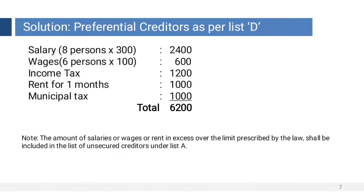Now let us see how to prepare preferential creditors as per List D. Salary: 8 persons into Rs. 300 equals Rs. 2,400. Wages: 6 persons into Rs. 100 equals Rs. 600. Taxes — income tax Rs. 1,200. Rent for 1 month Rs. 1,000. Municipal tax Rs. 1,000. Total Rs. 6,200.